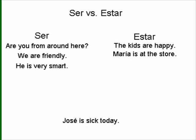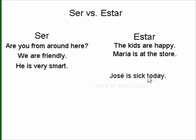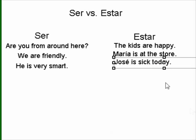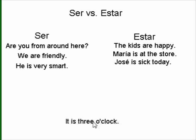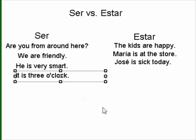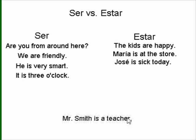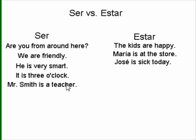Jose is sick today — that's a condition. Estar is used to talk about conditions. It is three o'clock — telling time, we use the verb ser. And one more example: Mr. Smith is a teacher. There we are talking about occupation. We use ser to talk about occupation.